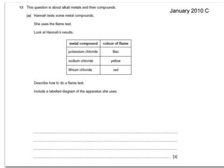Here's a past paper question on this topic. This question is about alkali metals and their compounds. Hannah tests some metal compounds using a flame test. Look at Hannah's results: potassium chloride gives a lilac flame, sodium chloride gives yellow, and lithium chloride gives red. The question asks: describe how to do a flame test and include a labeled diagram of the apparatus you would use.